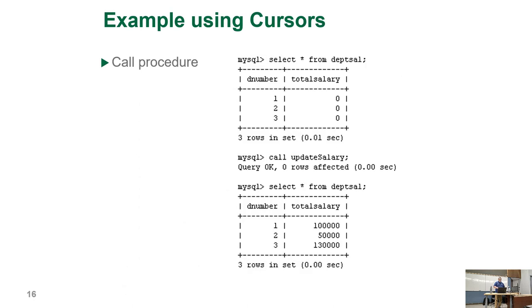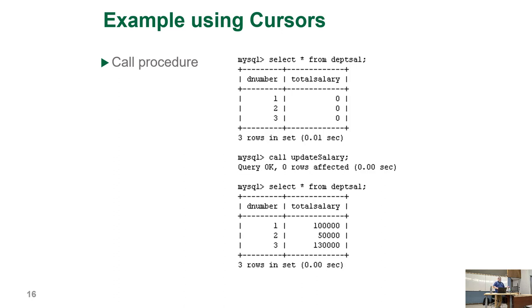When we CALL update_salary — notice there are no parameters — it'll do the same work as before. But now if we add a new department, life is good.